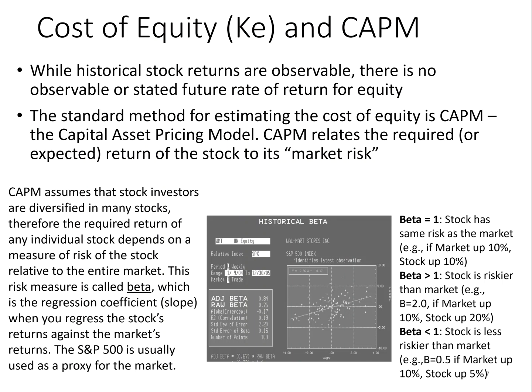While historical returns on stock are observable — you can know exactly what rate of return your stock had last year — there's no observable or stated future rate of return for stock or equity. There's a standard model called the CAPM, the Capital Asset Pricing Model, and this model is widely used to get the cost of equity used in a weighted average cost of capital. This CAPM model relates the required or expected return of a stock to its market risk.